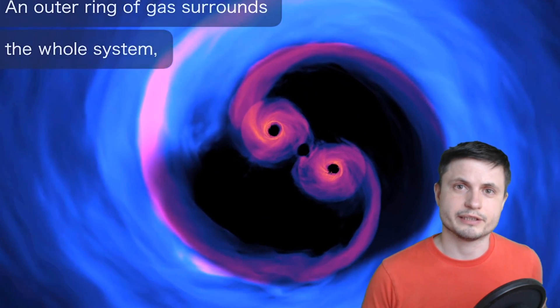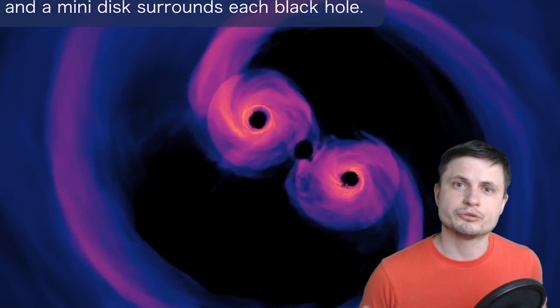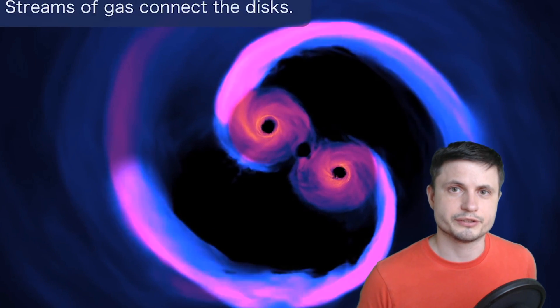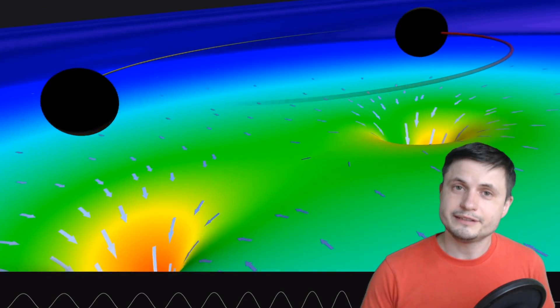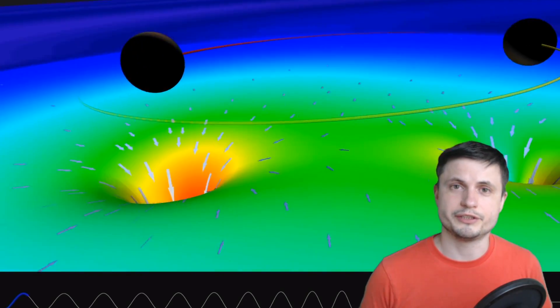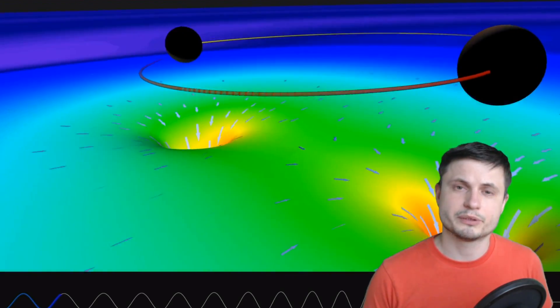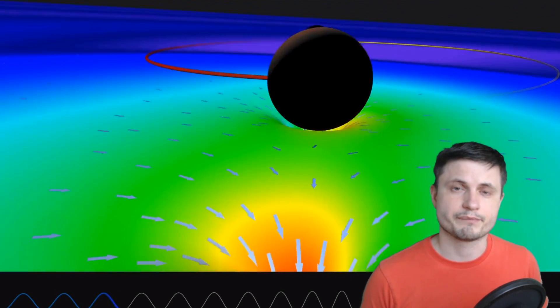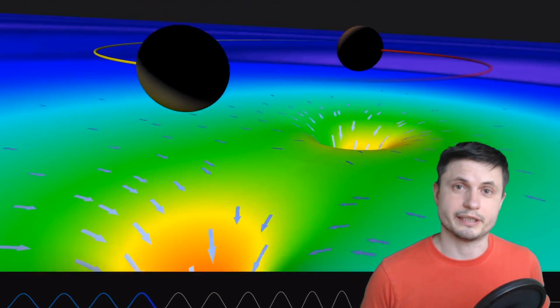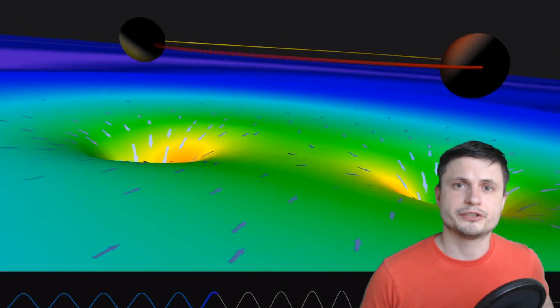In previous videos we've discussed neutron star collisions, black hole neutron star collisions, and different types of black hole collisions. But today we're talking about yet another black hole collision that's a little bit different from everything else we've seen so far. It's basically two black holes of completely different masses. It might not sound too exciting, but it is actually a really interesting discovery simply because of what we believe caused all of this to happen.